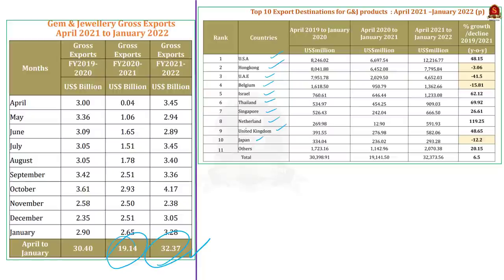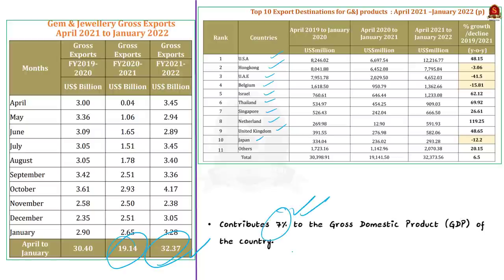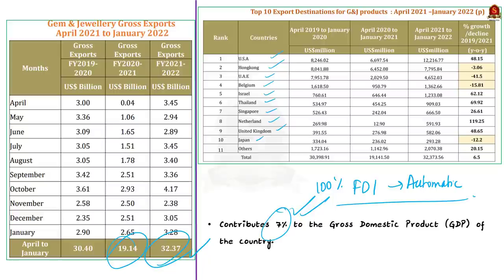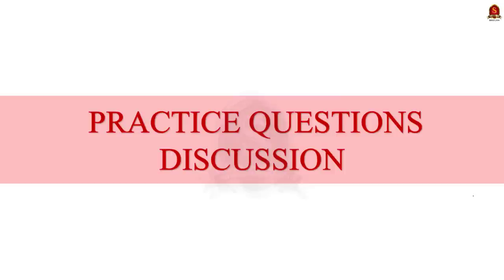During April 2021 to January 2022, gem and jewelry exports increased by around 70% — from 19.14 billion to 32.37 billion US dollars. The top 10 export destinations are USA, Hong Kong, UAE, Belgium, Israel, Thailand, Singapore, Netherlands, United Kingdom, and Japan. The US accounts for nearly one-fourth of India's total gem and jewelry exports. This sector contributes 7% to India's GDP. To further promote it, the government is taking many initiatives, including permitting 100% FDI in this sector under the automatic route.